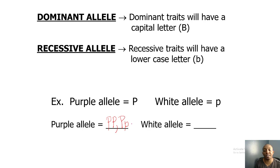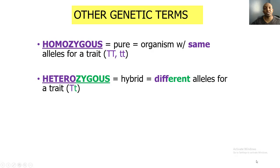Remember, per the law of dominance, if we have a capital letter it's always going to hide or mask the lowercase letter, so both of those combinations show as purple. In order for the white allele to appear, it can only come one way: two lowercase p's. If there's even one uppercase P, it dominates and hides the lowercase p. So the only way to have the white allele show is two lowercase p's — the recessive alleles.